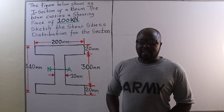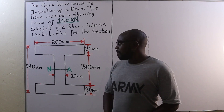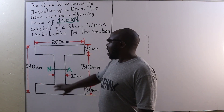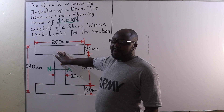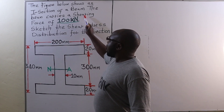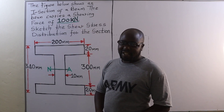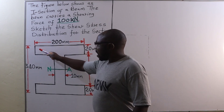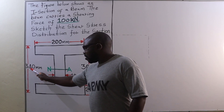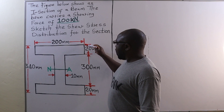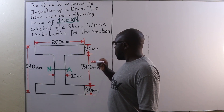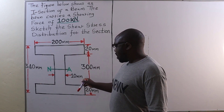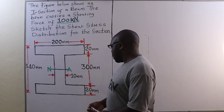Welcome to today's lesson about sketching the shear stress distribution for an I-beam section. The diagram shows an I-beam section carrying a shearing force of 100 kilonewtons. The beam has a breadth of 200 millimeters and a total depth of 340 millimeters, a flange thickness of 20 millimeters, a web depth of 300 millimeters, and a web thickness of 10 millimeters.